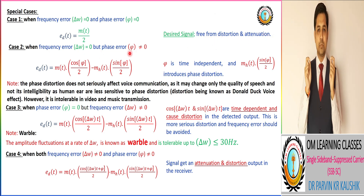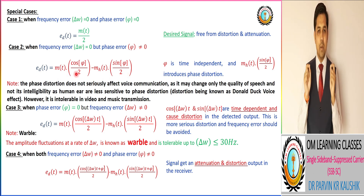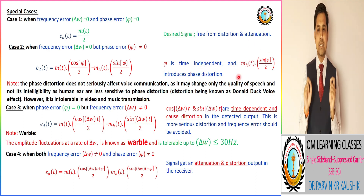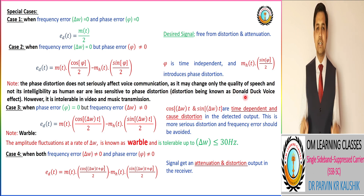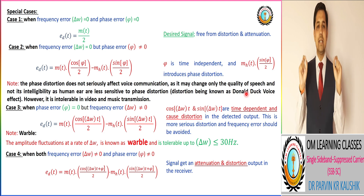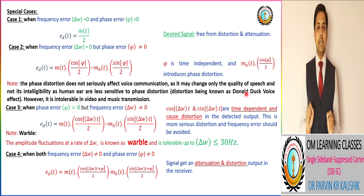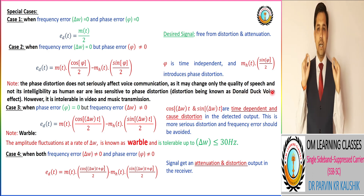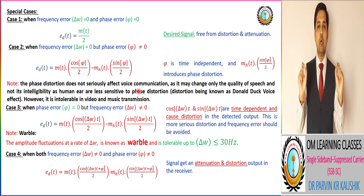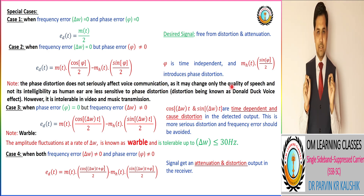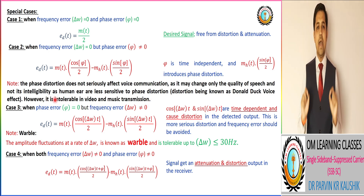In Case 2, if phase error φ is present but the frequency error is zero, the EDT output equals m(t)/2 · cos(φ) minus m̂(t)/2 · sin(φ). Since φ is time-independent, the term m̂(t)·sin(φ)/2 introduces phase distortion. Importantly, there is no quadrature null effect in SSB-SC modulation technique as there is in DSB-SC. Considering the Donald Duck voice effect, phase distortion does not seriously affect voice composition because our ears are less sensitive to phase distortion — however, it is intolerable in video and music transmission.